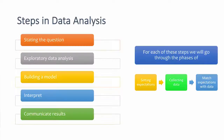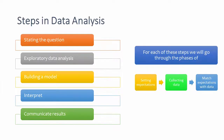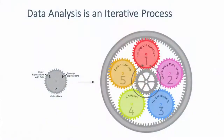Now I will talk about steps in data analysis. The first step is stating the right question. The second is exploratory data analysis. The third is building a model. The fourth step is to interpret and communicate the results. For each of these steps we go through phases: setting expectations, collecting the data, and matching expectations with data. This is an iterative process — when you do data analysis, you go through all these steps, and in the first iteration you may not get good results, so you keep on iterating.